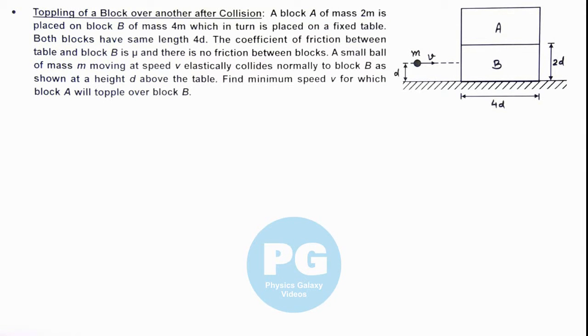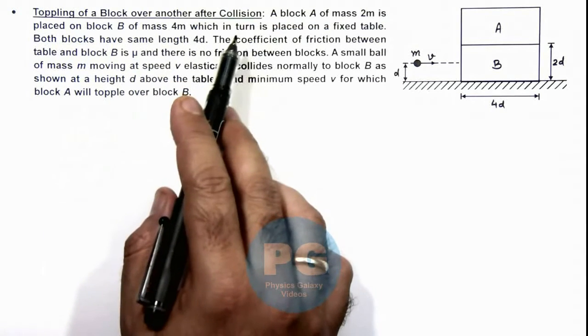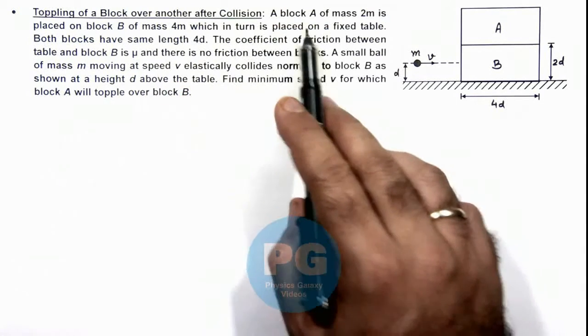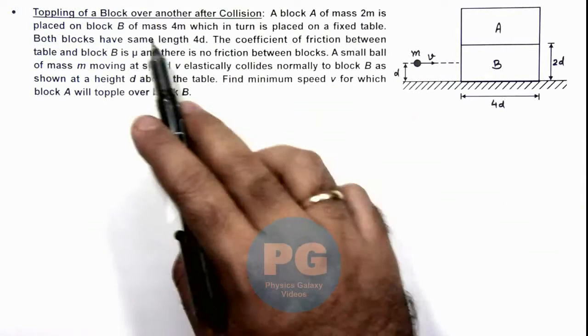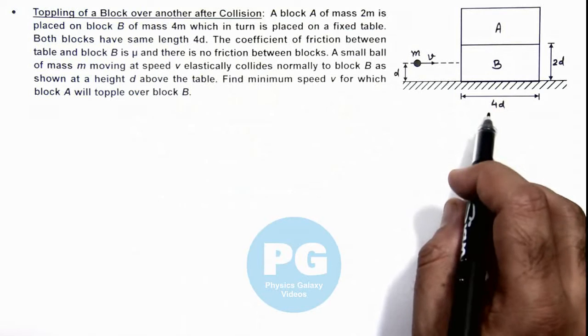In this illustration we'll analyze the toppling of a block over another after collision. Here we are given that a block A of mass 2m is placed on block B of mass 4m which in turn is placed on a fixed table.